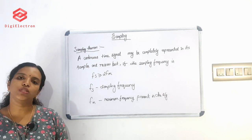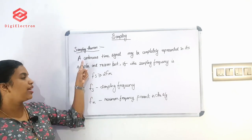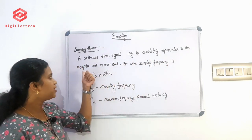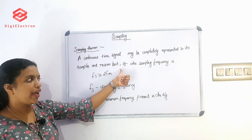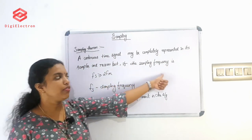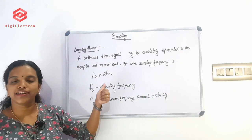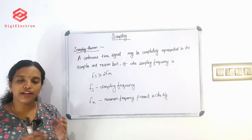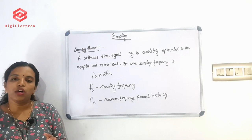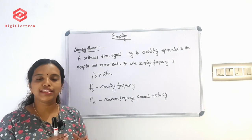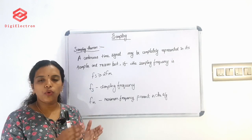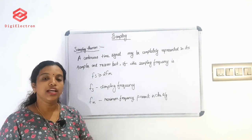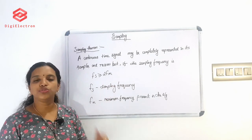This is sampling theory. Sampling theory states that a continuous time signal may be completely represented by its samples and recovered back if the sampling frequency Fs is greater than or equal to 2Fm. If we use modulation, we use this sampling frequency condition.